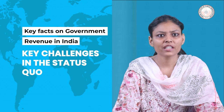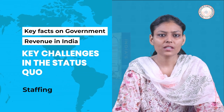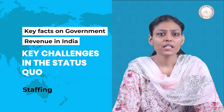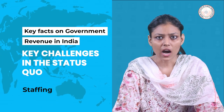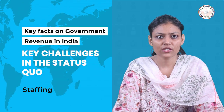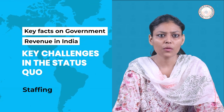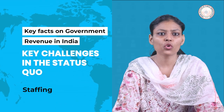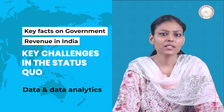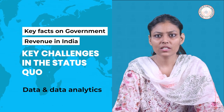Several challenges of administration and structure for revenue collection in India include understaffing. To address tax collection, different agencies are suggested — CBDT, CBIC, and IRS are employed in these specialized organizations. These agencies represent a shortage of staff, which makes the situation more problematic. Data and data analytics: GST is the best tool to rectify and analyze data. GST is a self-enforcing tax system.